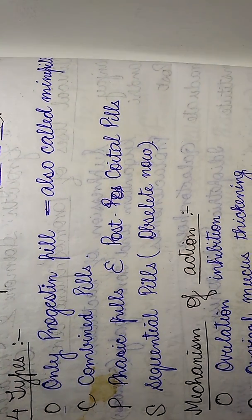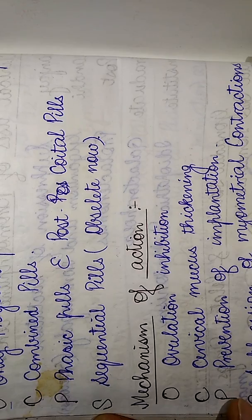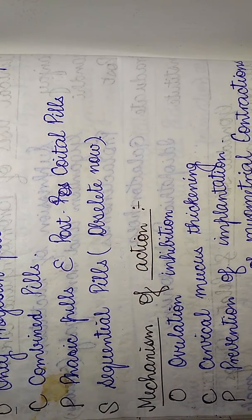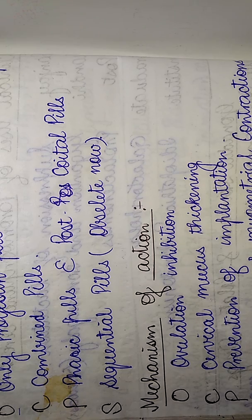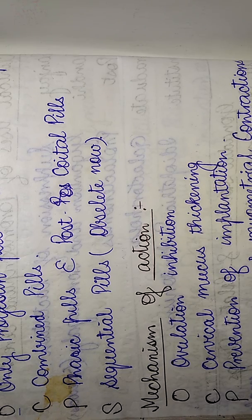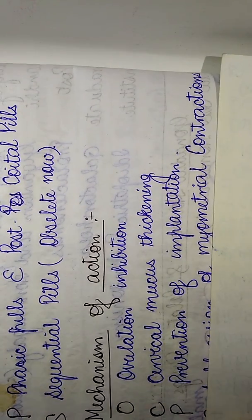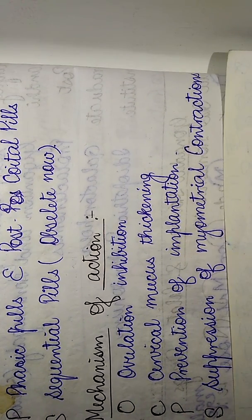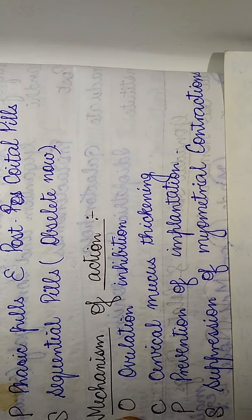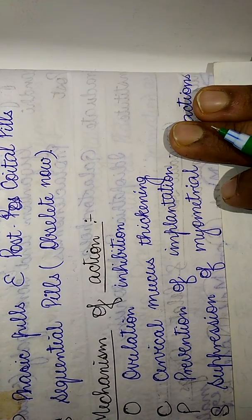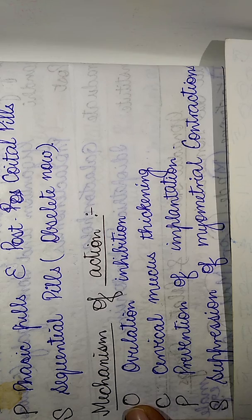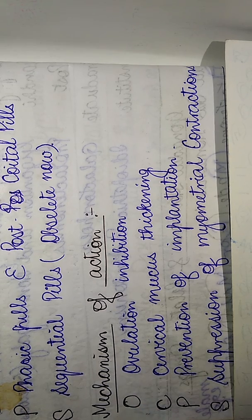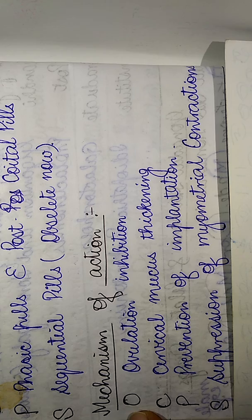While looking at the mechanism of action — just a quicker look as to how these oral contraceptive pills are going to act — the mechanism of actions can be well remembered using the mnemonic OCPs again. The O stands for the inhibition of ovulation, so the first O stands for ovulation inhibition.